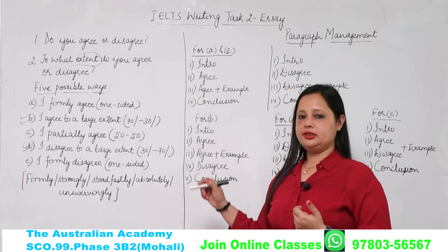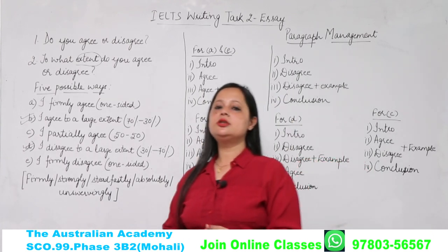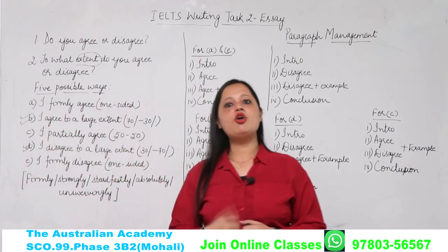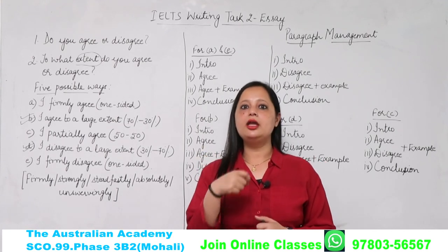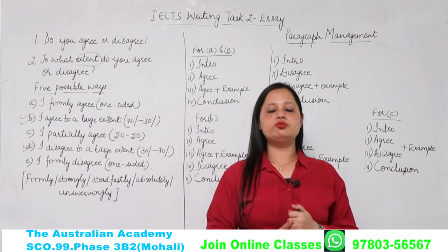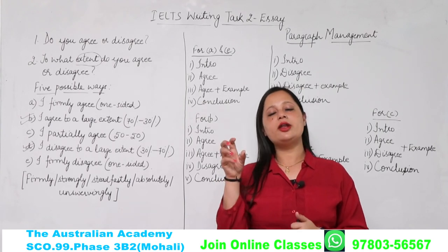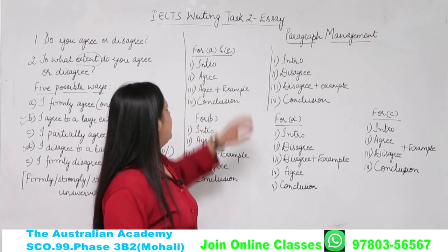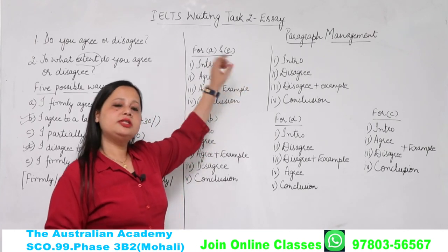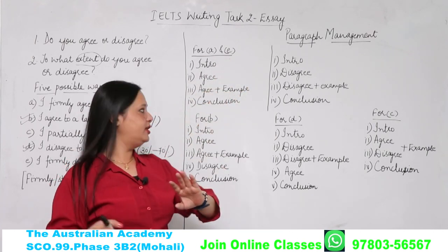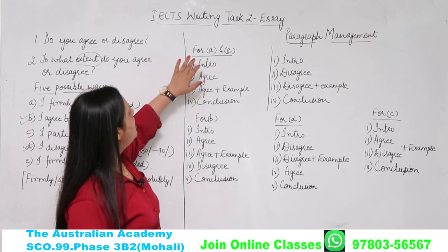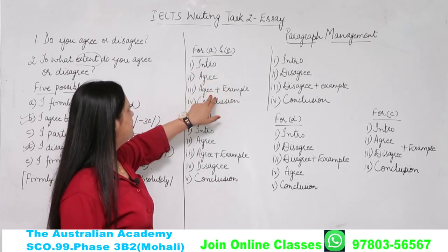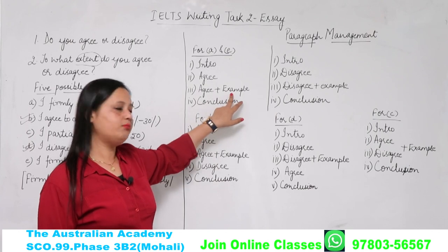Ab aate hain paragraph management par. Maanlijo maine decide kar liya ki maine a, b, c, d, e — in pancho mein se kaunsa choose karna hai apne particular topic ke liye. Ab another important thing is paragraph management — kitne paragraphs banane hain aur kis paragraph ke andar kaunsa content add karna hai. Toh hum pehle lete hain A aur E — jo single-sided hain, jismein second side lena hi nahi hai. Agar aapke paas A hai, toh: first paragraph introduction, second agree, third bhi agree, usi mein example doge, aur fourth conclusion.